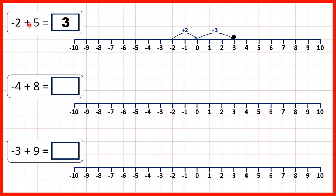So if we switch the question around we'll get the same answer. Now we have minus 4 plus 8. We could start at minus 4, and then count on 1, 2, 3, 4, 5, 6, 7, 8. That takes us to 4, so that's our answer.